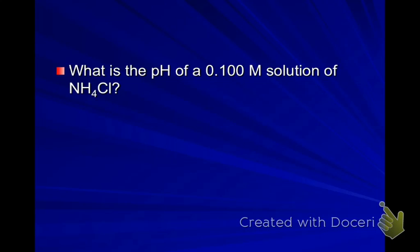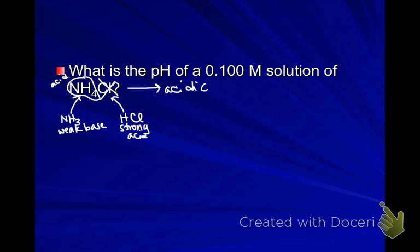What is the pH of a 0.1 molar solution of NH4Cl? So step one is to predict whether it should be acidic, basic, or neutral. NH4 comes from NH3, which is a weak base, so we know NH4 is going to act as an acid. Cl comes from HCl, which is a strong acid, so Cl- is not likely to act as a conjugate base. Therefore, our solution should be somewhat acidic.